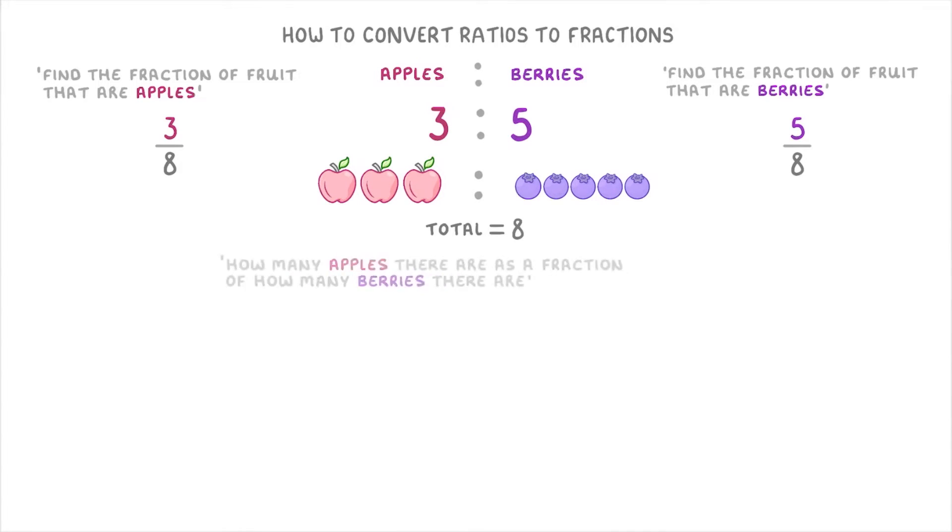The other thing that we can do is write how many apples there are as a fraction of how many berries there are, and vice versa. So because there are 3 apples and 5 berries, there are 3 over 5, or 3 fifths, as many apples as there are berries.